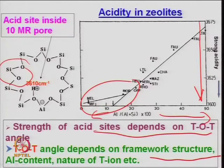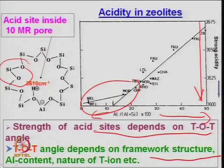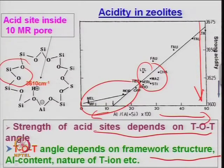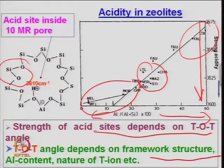MFI type zeolite — ZSM-5, Mobil-5 zeolite — and mordenite also have equally good acidity strength. LTA, faujasite, chabazite, erionite have some mild acidity — weaker type acid sites. Lewis type acidity may be present in these zeolites because aluminum is more in their framework.